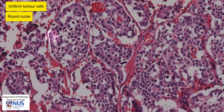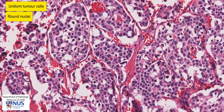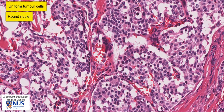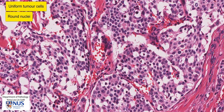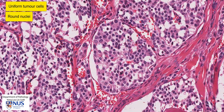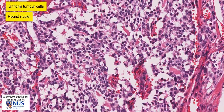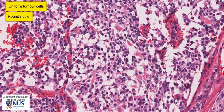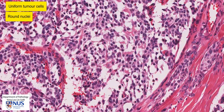There are some larger nuclei. While the majority of the nuclei are of similar size, occasional nuclei are larger than the rest. This is not uncommon in the setting of neuroendocrine tumors. Let's have a closer look at the nuclear chromatin.